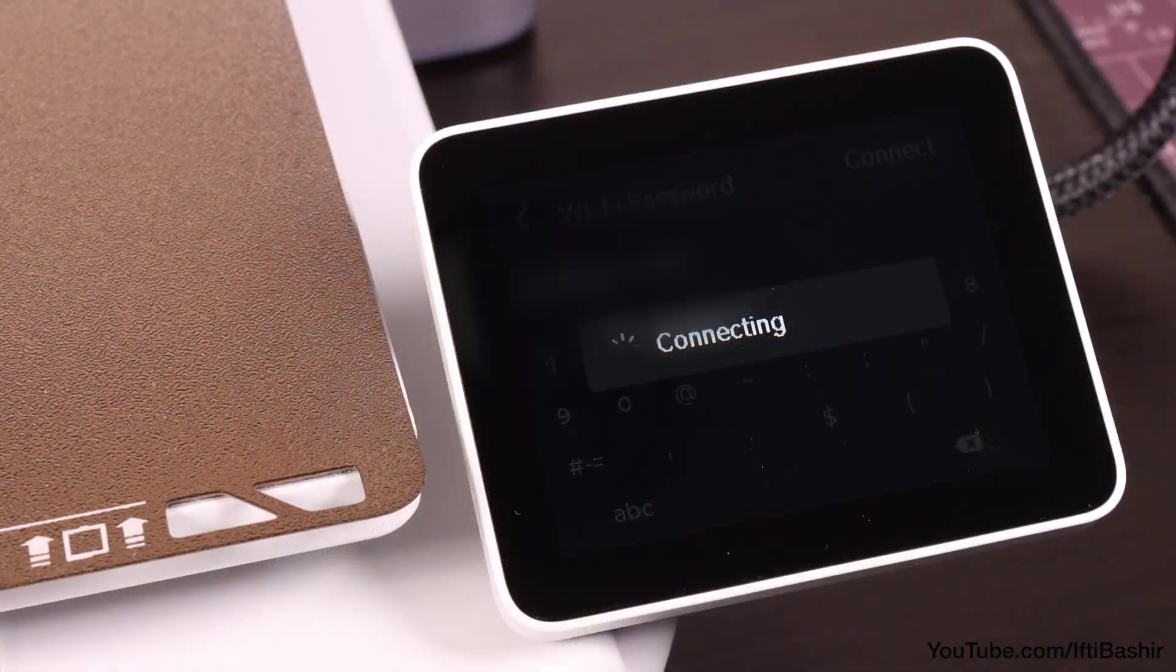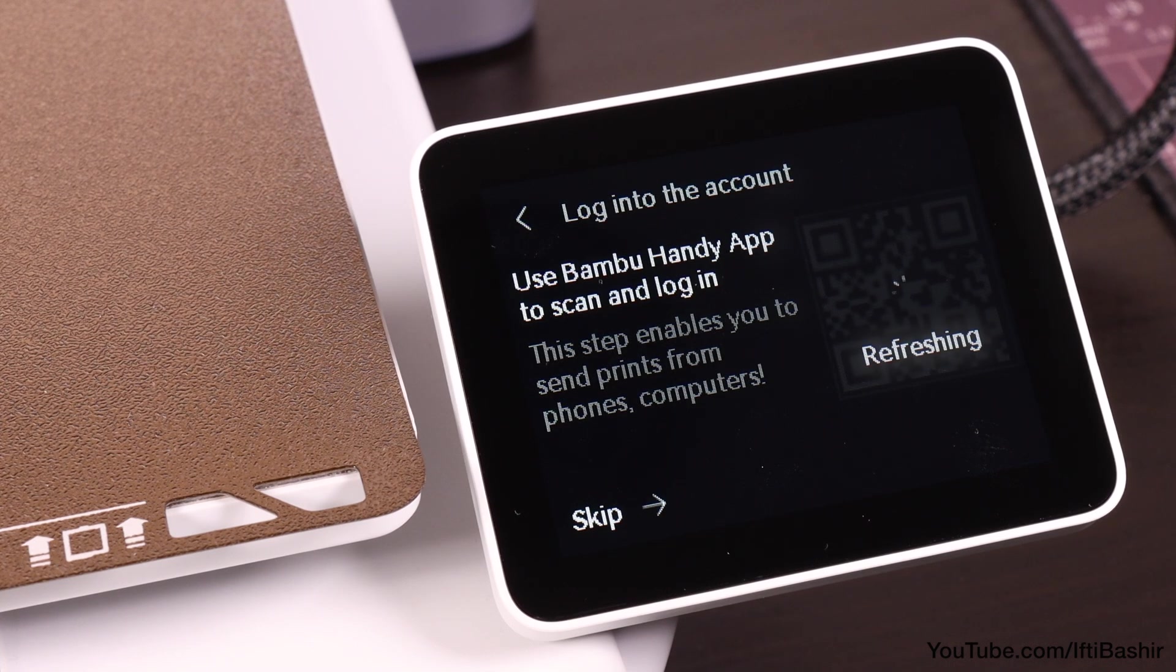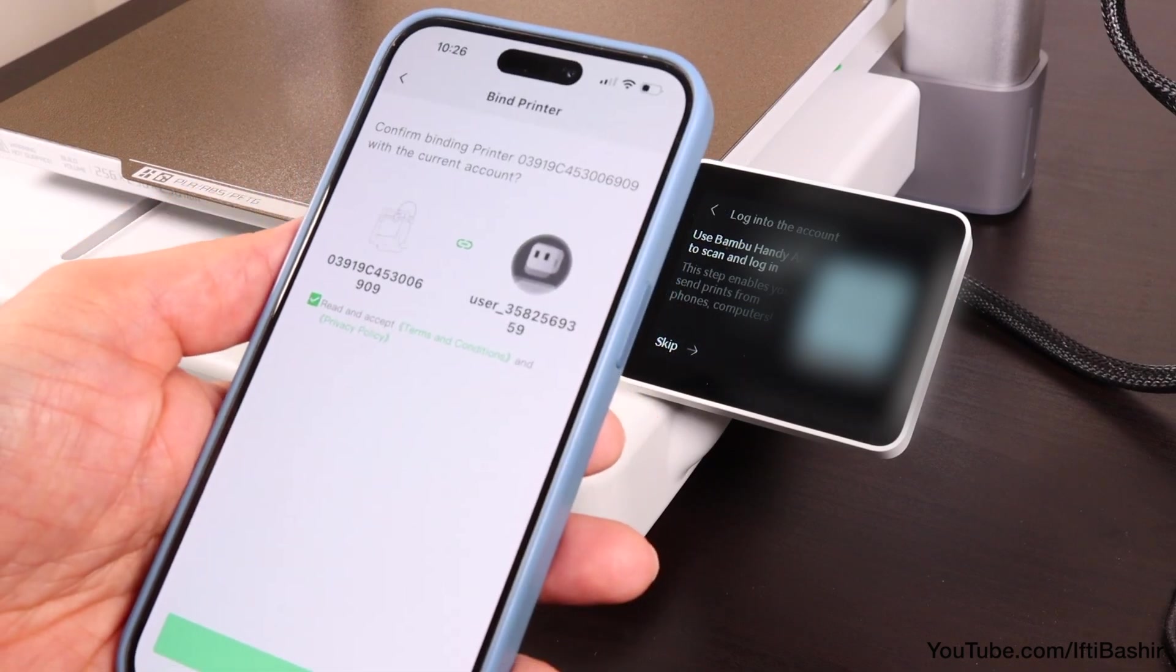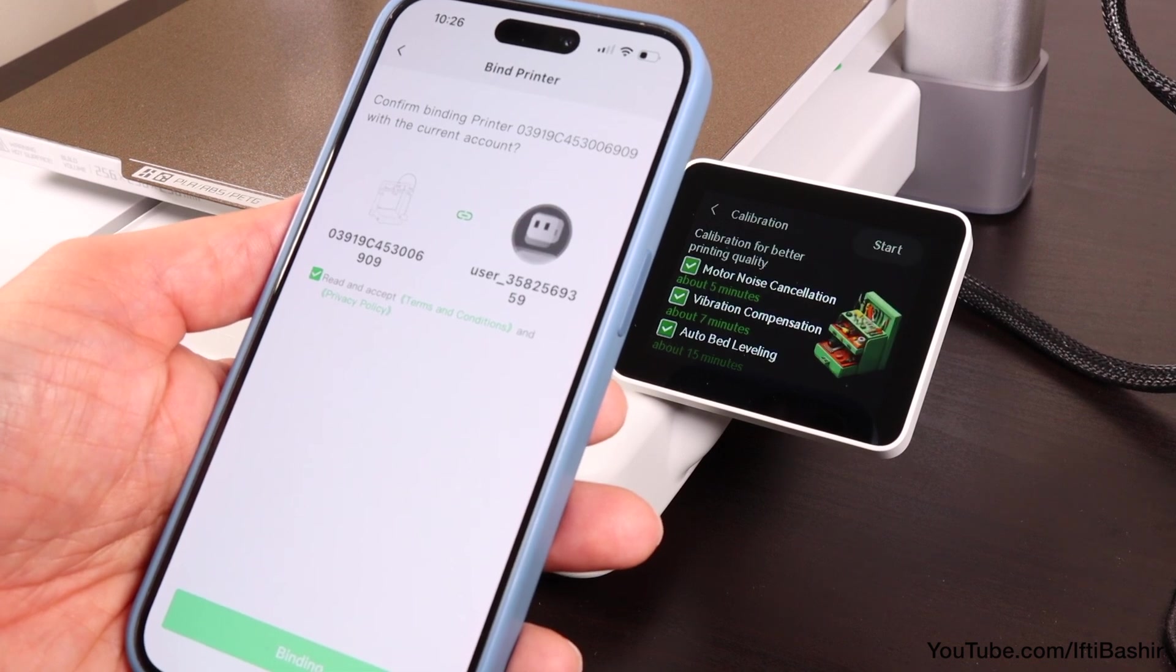With that at the ready, we can proceed to input our network details in order to connect to the 2.4 GHz wireless network. After which we can scan the QR code using the downloaded app in order to connect and control the printer.